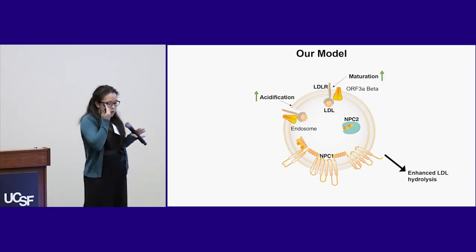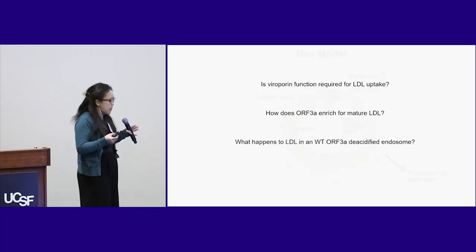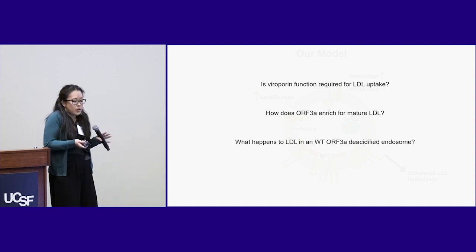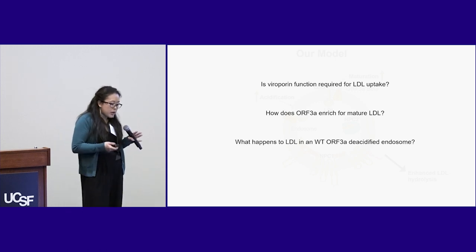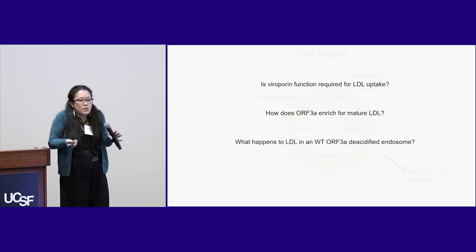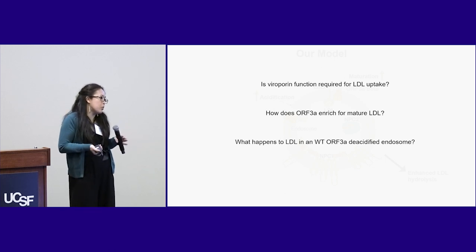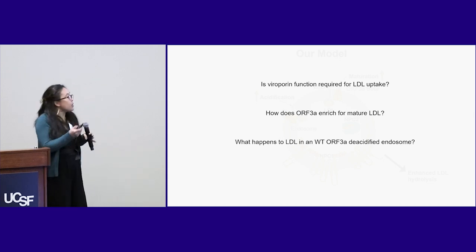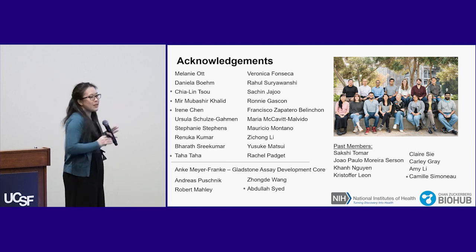We have additional questions: Is the viral porin function required for LDL uptake? Is beta variant ORF3A structurally different from wild type? We don't know how ORF3A is enriching for more mature LDLR. And what happens to the LDL that is either slowly hydrolyzed or trapped in the endosome? This is where we are in our project. We have lots of BSL-3 work done, and I want to thank our lab and others for their efforts.